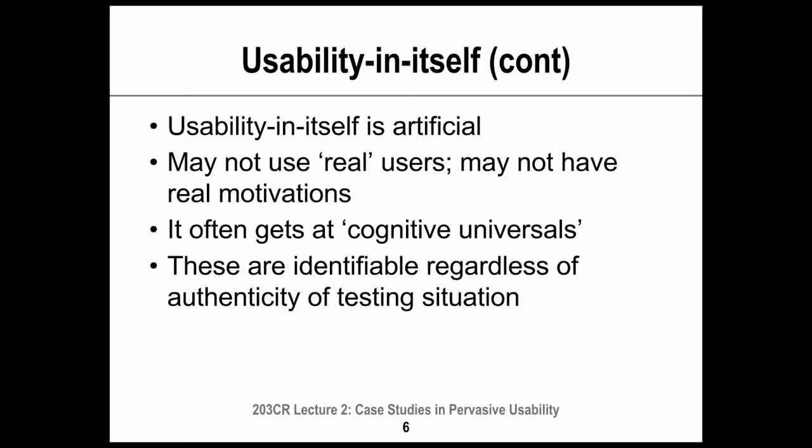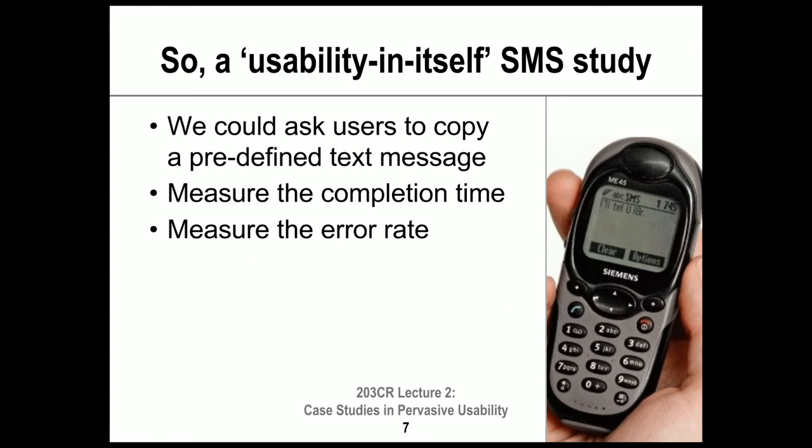Usability in itself is very good for getting at cognitive universals — things like how quickly you can see something, press something, or link two events together. Because cognitive universals are not affected by context or motivations, we can identify things like completion times and error rates regardless of how authentic the testing situation is. The situation can be completely artificial and we will still get valid results.